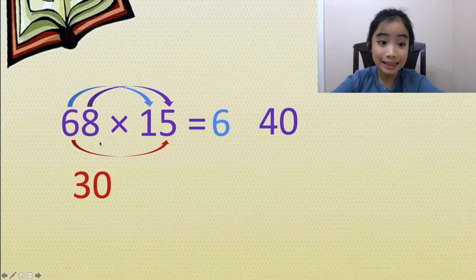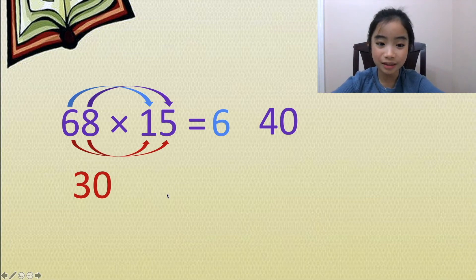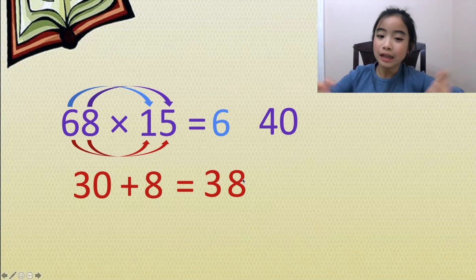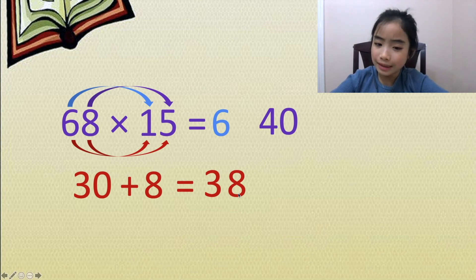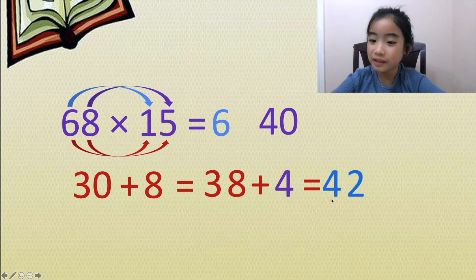And lastly, let's multiply the ones digit of the first number to the tens digit of the second number. We have 8 times 1 equals 8. Now let's add it up. 30 plus 8 equals 38. So how do we put 38 between 6 and 40? Well, we see that the 8 is also in the tens place. So we have 38 plus 4 equals 42.